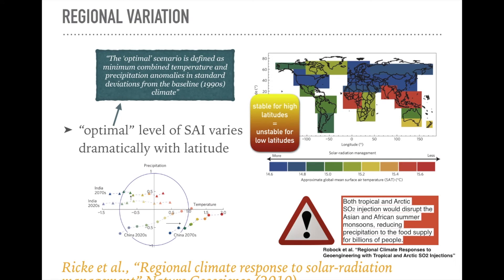Everything so far is about global averages — that says nothing about regional variation. What is the optimal amount of SO2 to emit? That depends on where you are and whose temperature you're trying to stabilize. What is stable for high latitudes is very unstable for equatorial latitudes and vice versa. The level of emissions needed to stabilize temperature in the US, China, and Europe would be really devastating elsewhere. Both tropical and Arctic SO2 injection would disrupt the Asian and African summer monsoons, reducing precipitation to the food supply for billions of people.